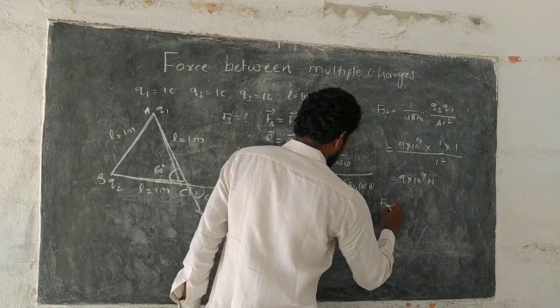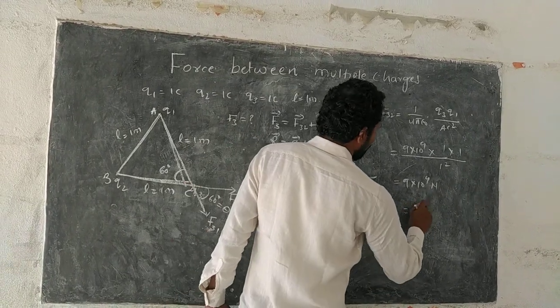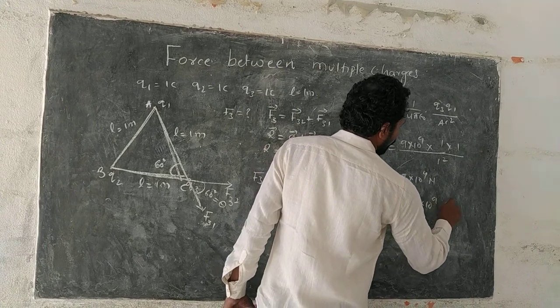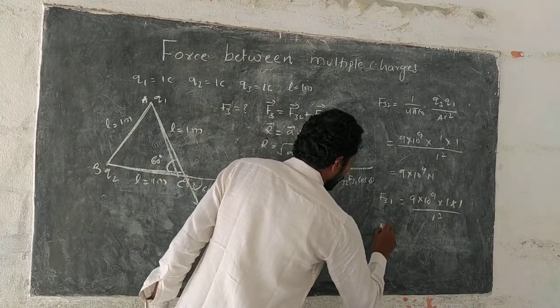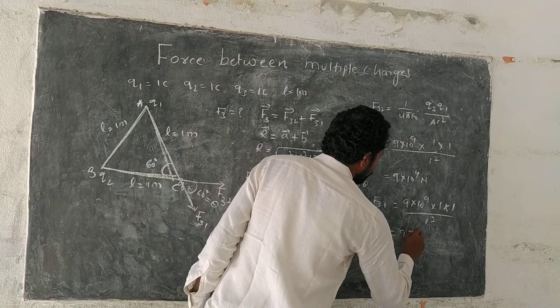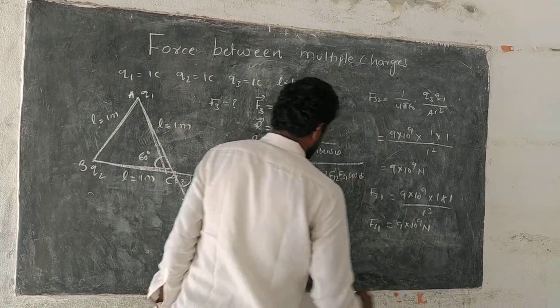Similarly, F31, also same, 9 into 10 power 9, 1 into 1 by 1 squared, F31 equals 9 into 10 power 9 newtons.